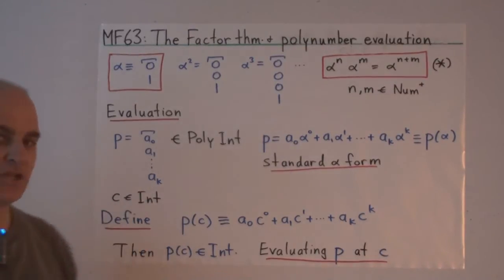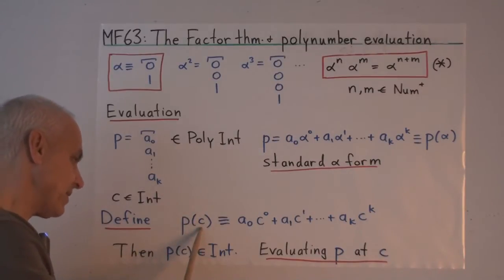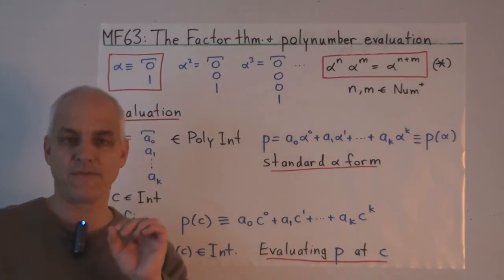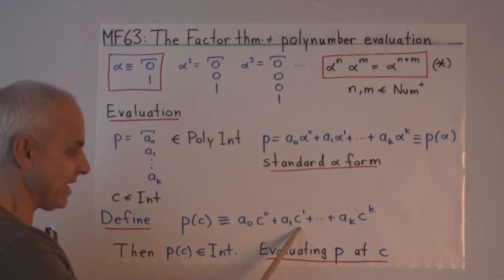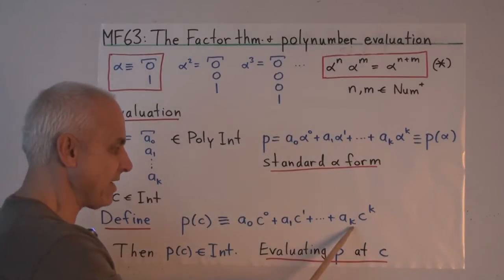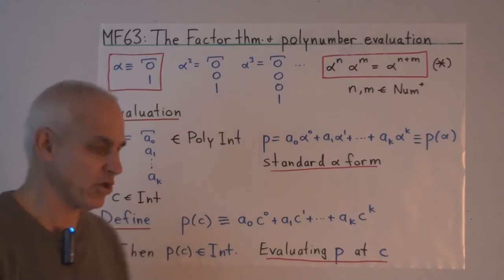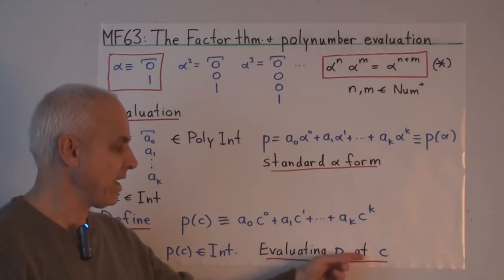And now suppose that we have an integer C. We're going to define what do we mean by P of C. In other words, P bracket C bracket. It is by definition this integer. What you get when you take the standard alpha form and simply replace all the alphas with C's. So a0 times C to the 0, that's just one, so that's just a0, plus a1 times C, plus a2 times C squared, and so on up to a sub k times C to the k. These are all integers, so this combination is also an integer. That's what we mean by P of C. And we call this evaluating P at C.